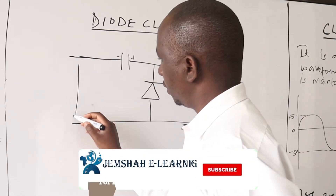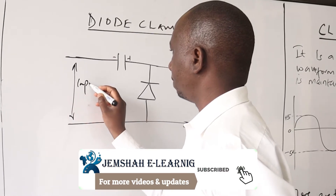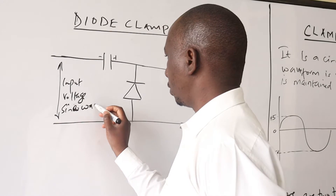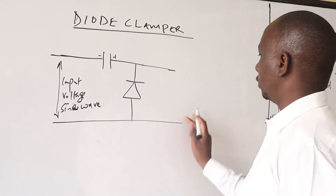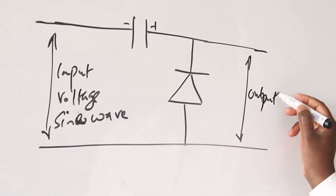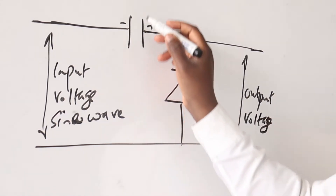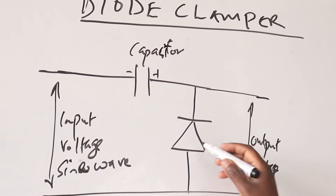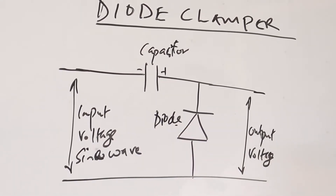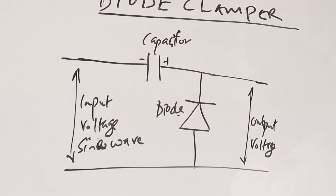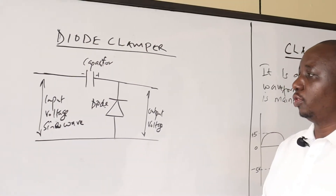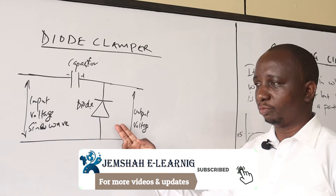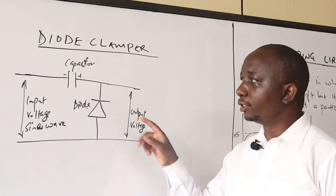What we have at this end is the input voltage, which in this case is a sine wave, and also what we have is an output voltage. This is a capacitor and this is a diode. This circuit is such that during the negative part of the sine wave, the diode is forward biased and we are able to charge the capacitor.